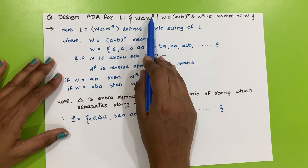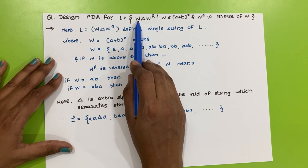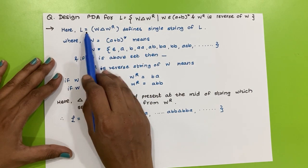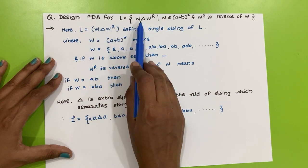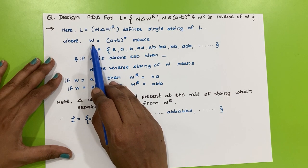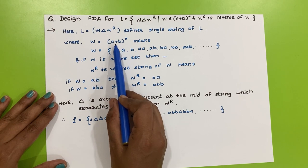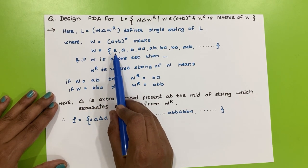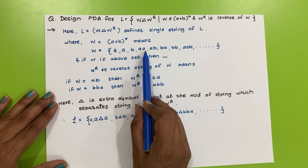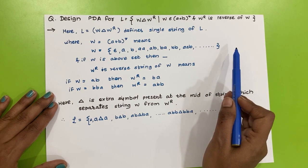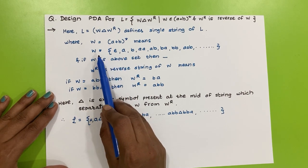First, we will see how each string of the language will be defined. We need to observe what will be the value of w and w^R. Here, L is composed of three parts: w, then △, then the reverse of w. Since w belongs to (a+b)*, w is a string of any combination of a and b — empty, then a, b, aa, ab, and so on up to infinite length.